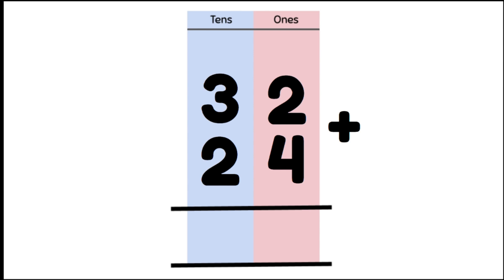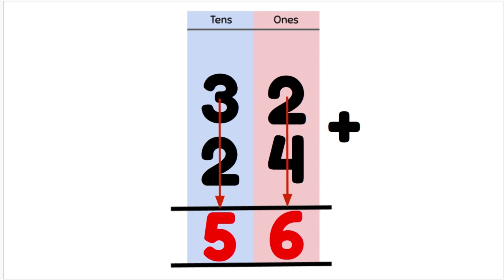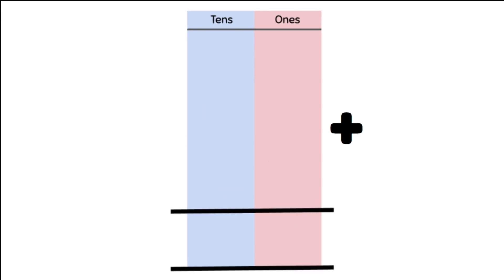This method is called the column method because we add down our columns by grouping our ones together and then adding them, and then grouping our tens together and adding them. This then gives us an answer that is our total number. Let's unpack a few examples further.